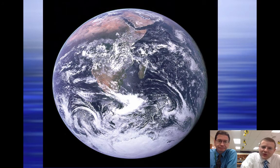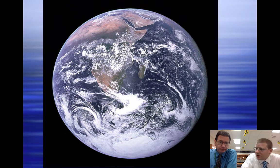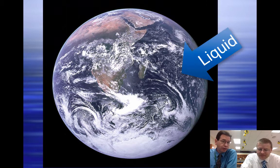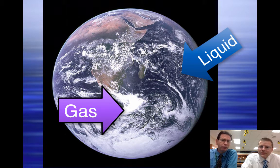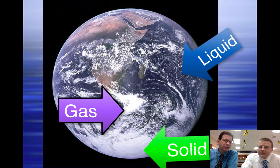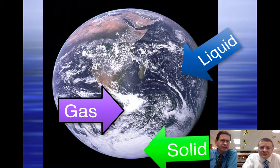Hey everyone, here's the Big Blue Marble, which shows that our planet is unique because it has water in three forms. What are they? You have the liquid water, which is pretty obvious — you can see the blue all over the place. You have water vapor, which is also pretty obvious, where you have a lot of white clouds everywhere. And some more white down there at the South Pole — we can see there are ice caps as well.